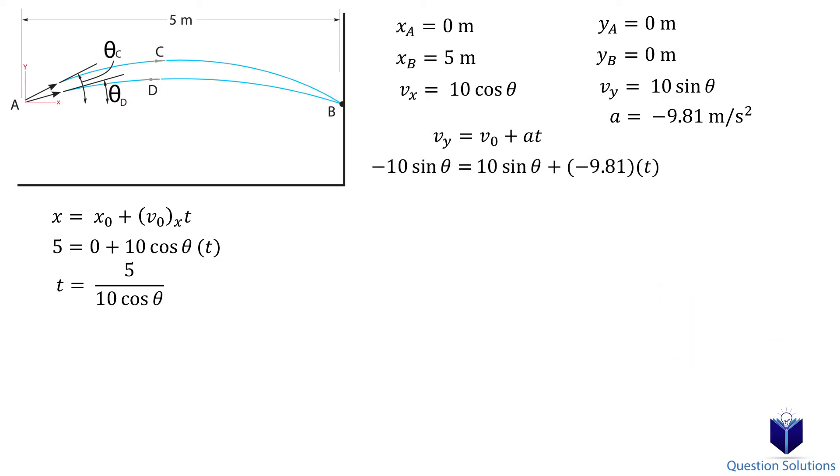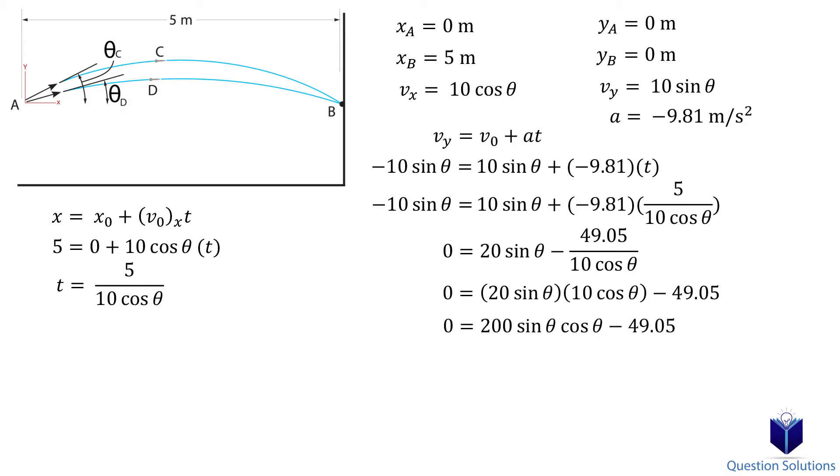Now, we need to substitute the t value from equation 1 into the second equation. Multiply both sides by 10 cos theta. Divide everything by 100, so that we can use the identity 2 sin theta cos theta is equal to sin 2 theta. Now, we can solve for theta. You can also graph this to get the two values as well.